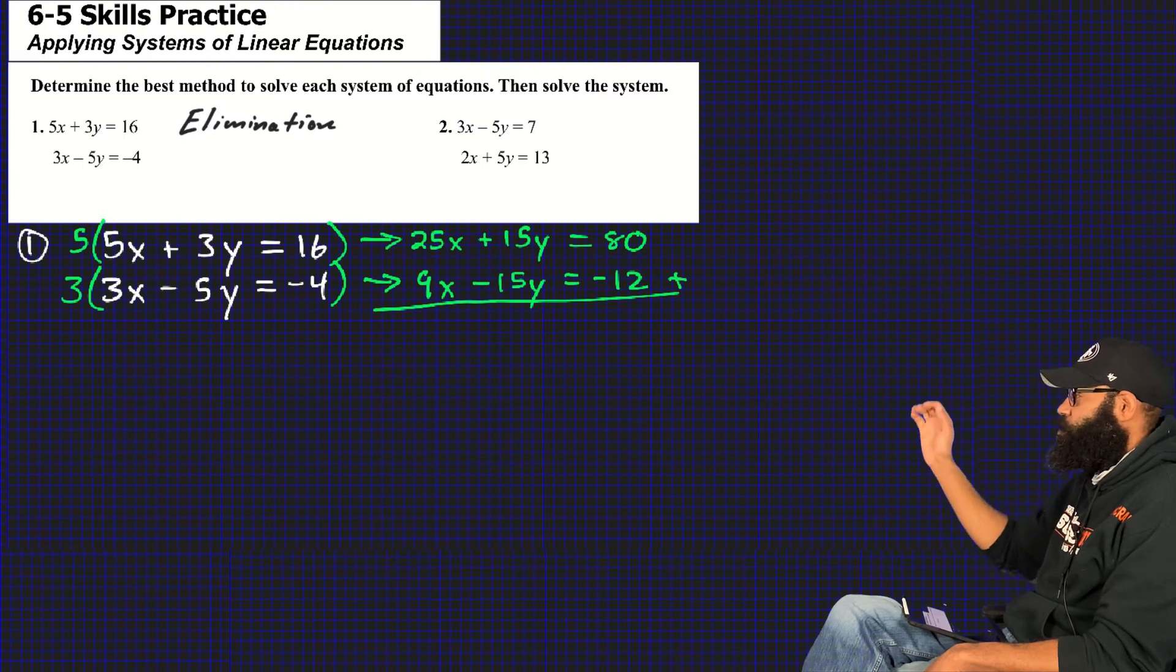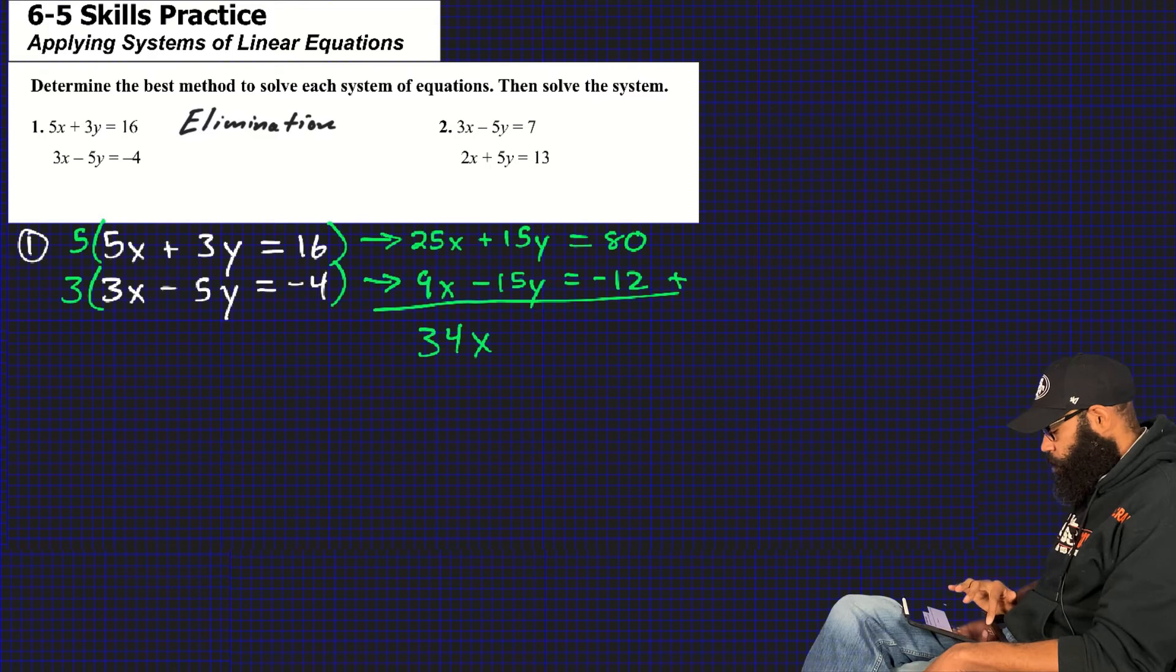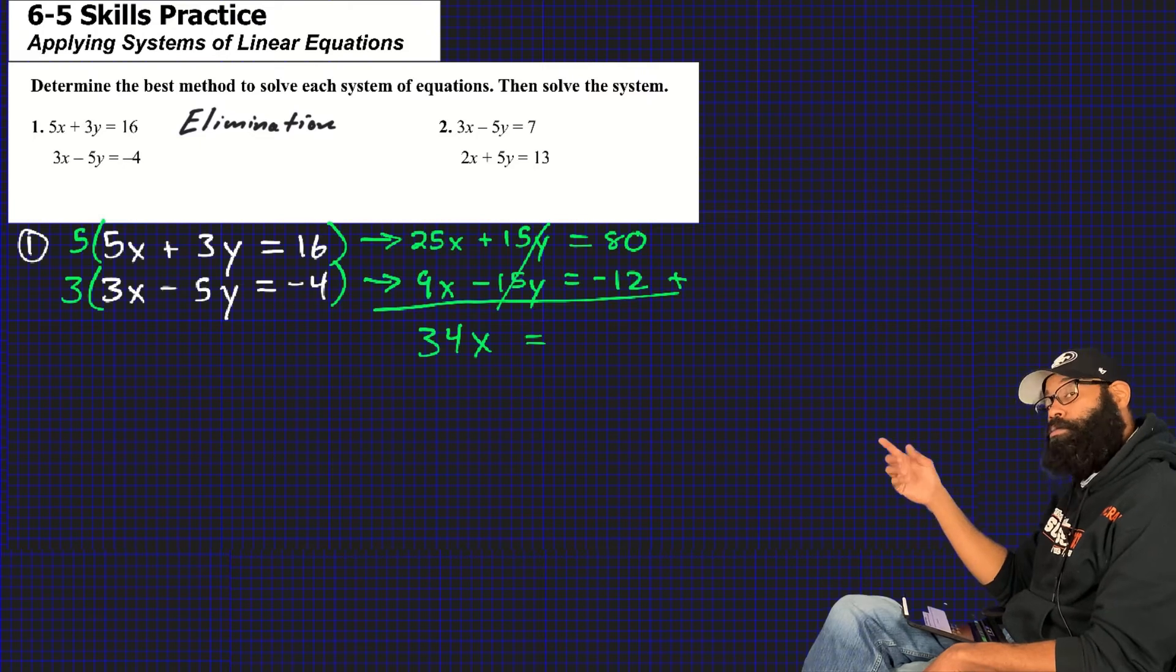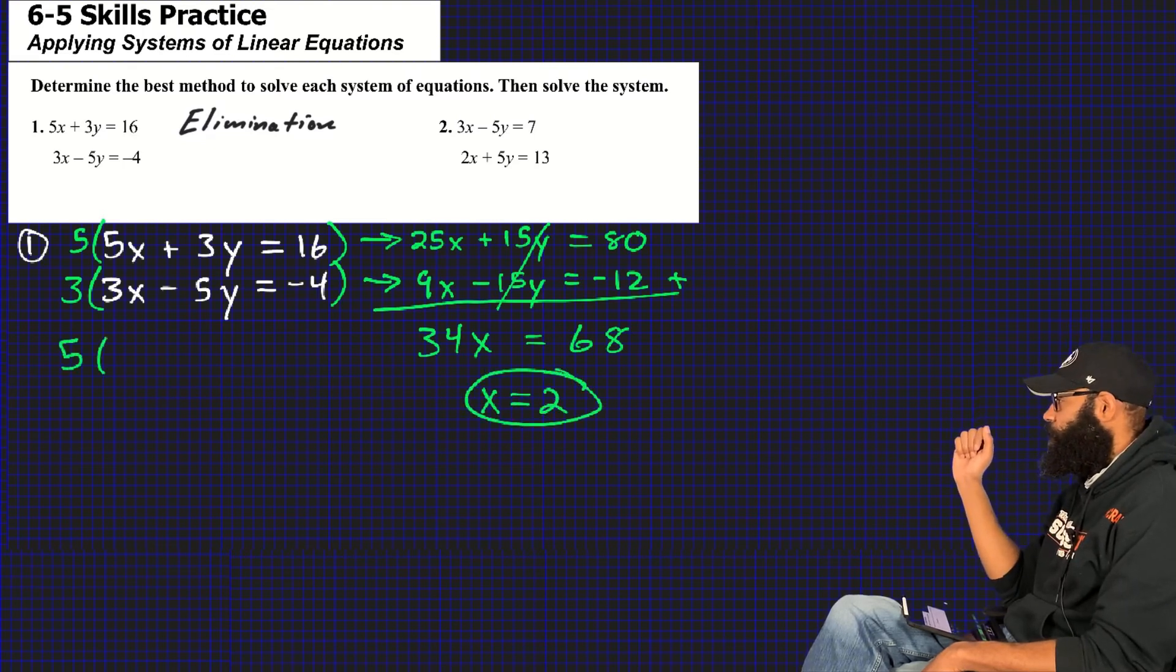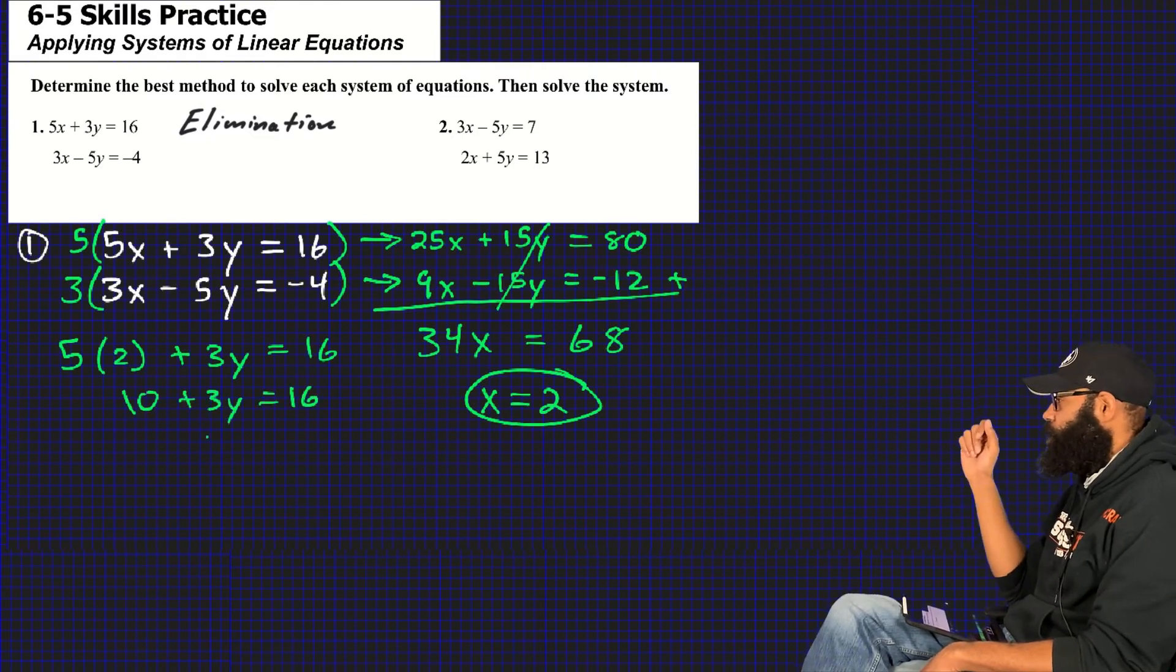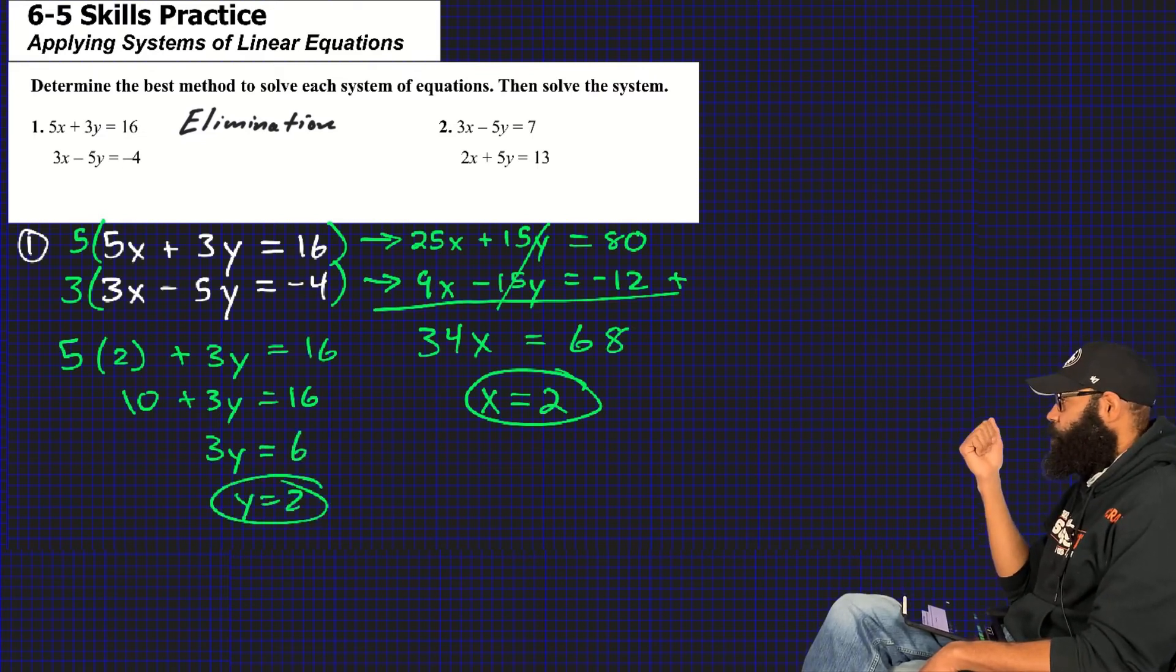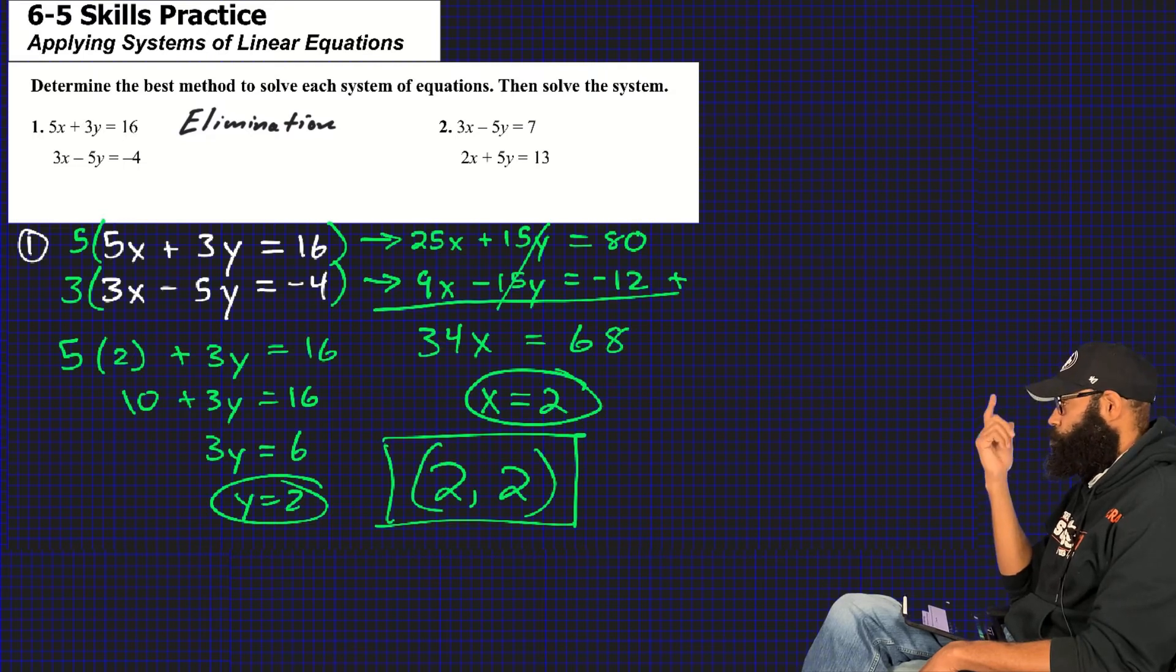Sometimes you've got to adjust both top and bottom, first and second equation, to make sure that you can get what you need. And what do we need here? We need opposite terms. In this case, opposite terms in the y, so that they cancel. That's our whole goal. By eliminating the y term, we got 34x is equal to 68. 34 times 2, so x is equal to 2. So we go back to the original equation and plug in the value of x so we can find out what y is equal to. 5 times 2, 10 plus 3y, subtract 10 from 16, 3y equals 6, y equals 2. So the first solution is (2, 2).